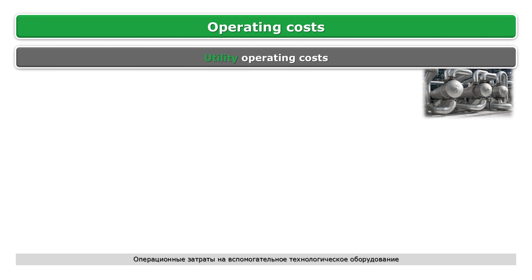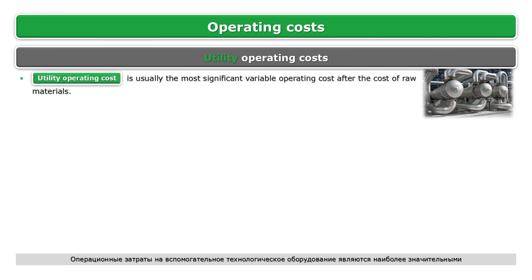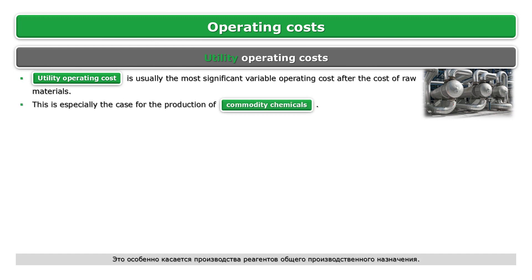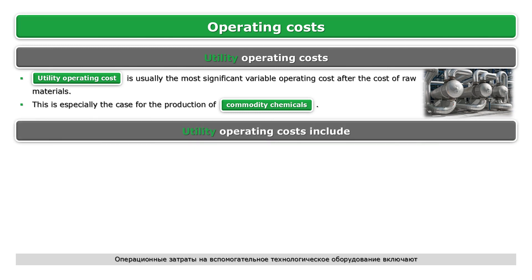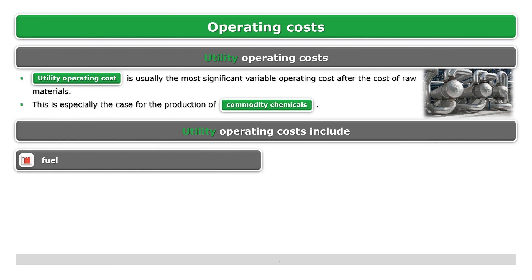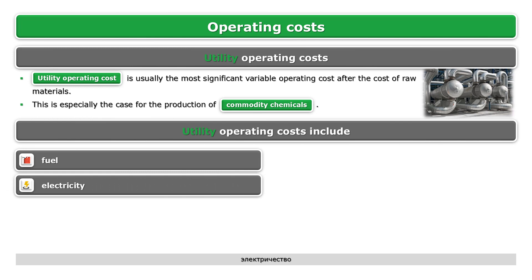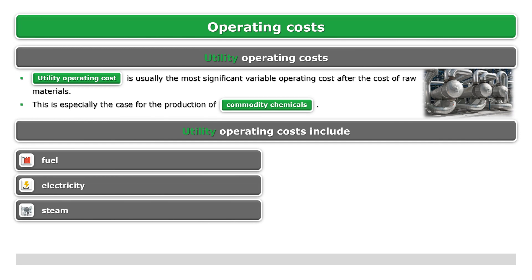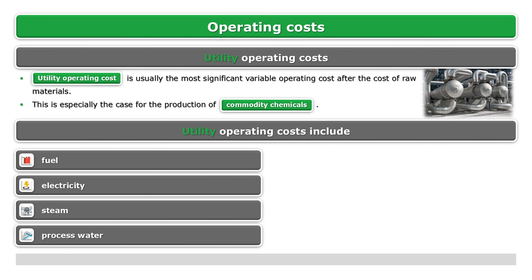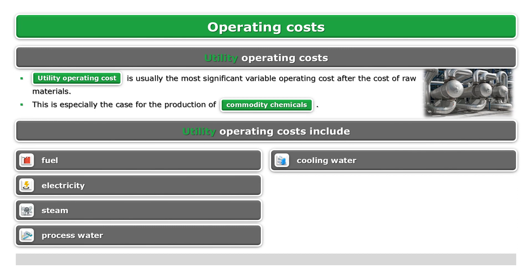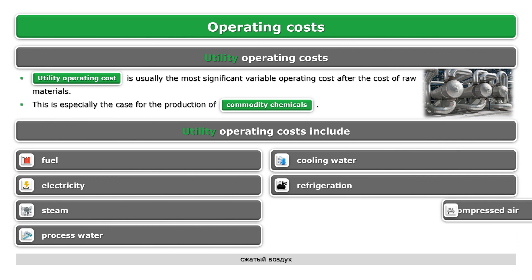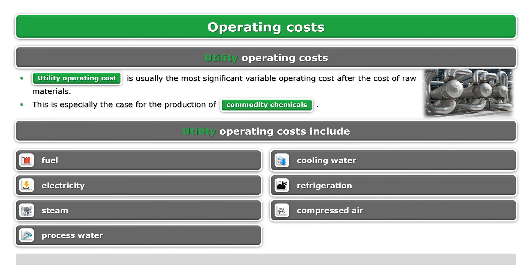Utility operating cost is usually the most significant variable operating cost after the cost of raw materials. This is especially the case for the production of commodity chemicals. Utility operating costs include fuel, electricity, steam, process water, cooling water, refrigeration, compressed air, and inert gas.